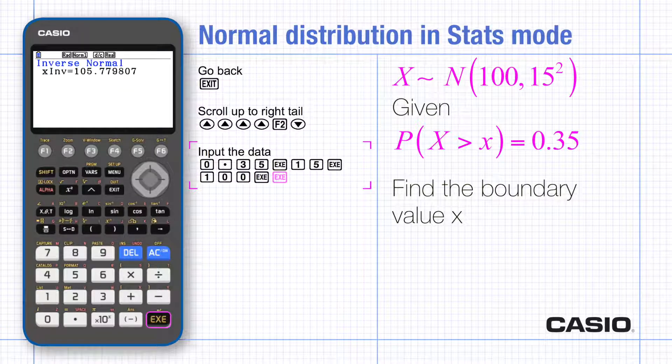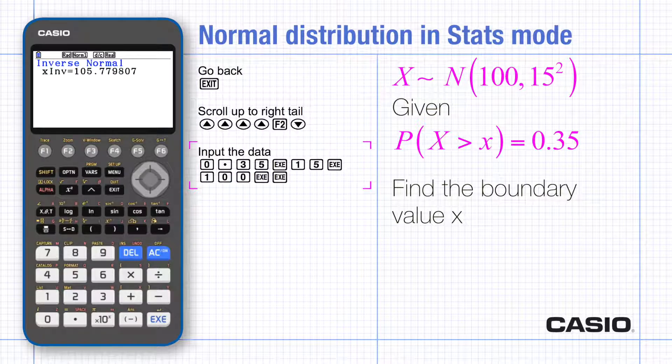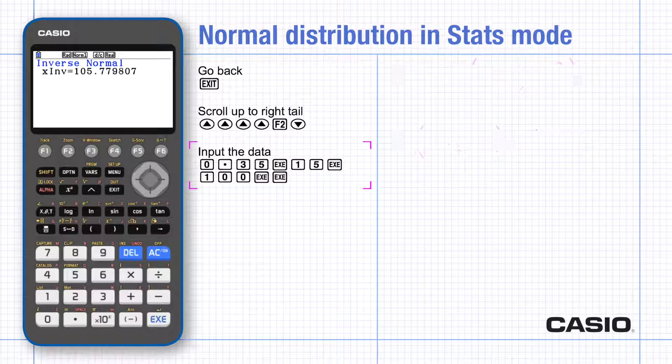So the boundary here has been found without any reference to the normal 0,1 distribution. Central regions find the boundary values which are symmetric about the mean for a given area.